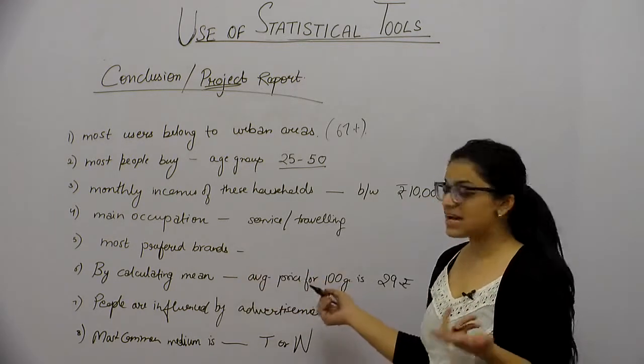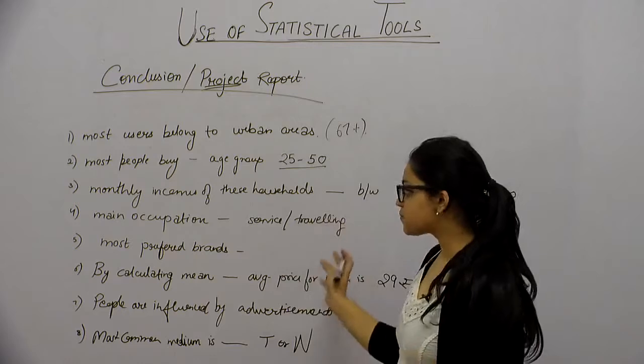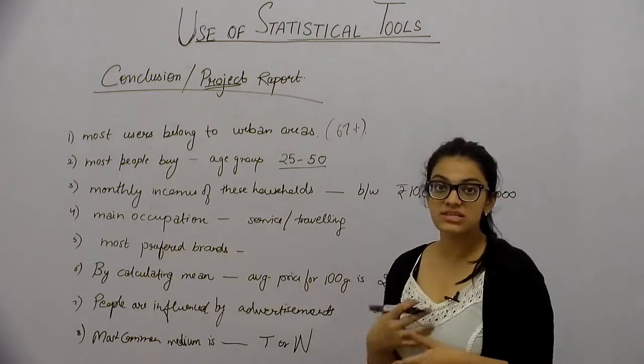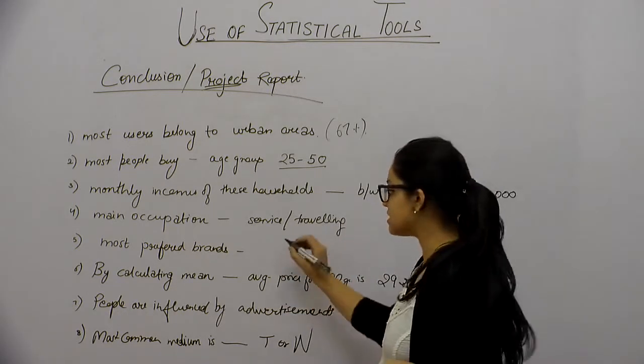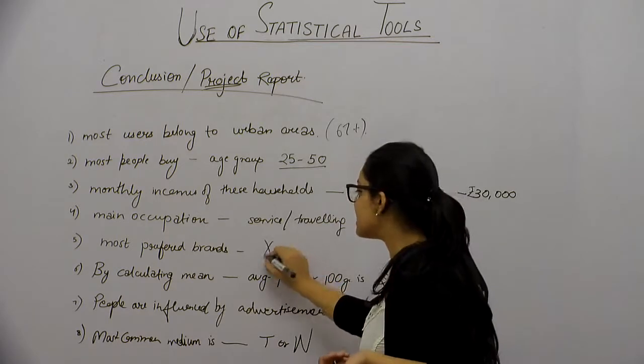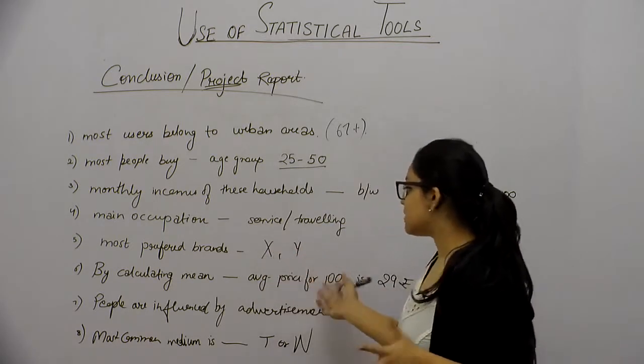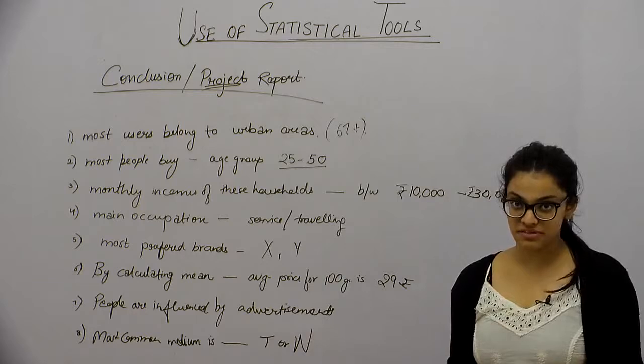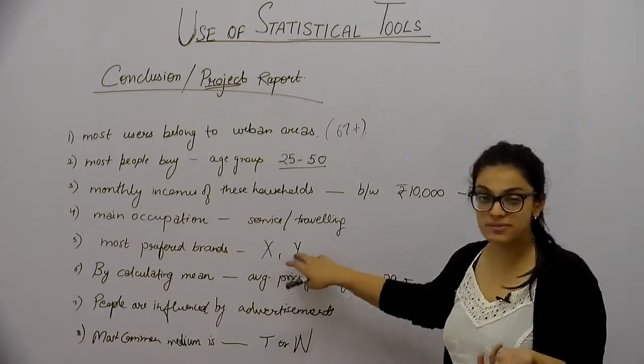Most preferred brands are from your analysis. You have seen what people prefer the brand's toothpaste. Let's say brand X or Y. They buy all the brands. They buy Colgate and Pepsodent.